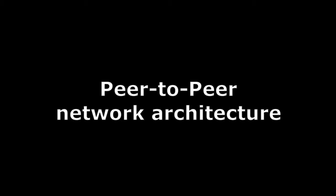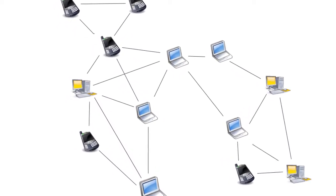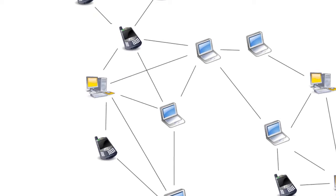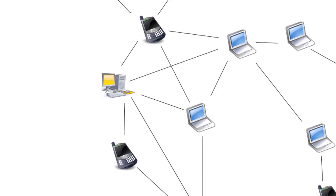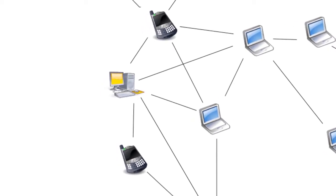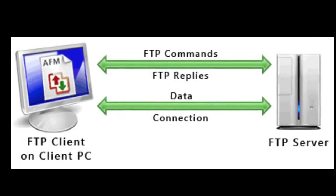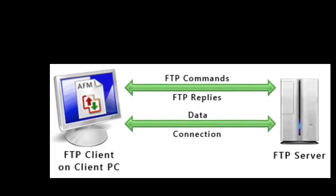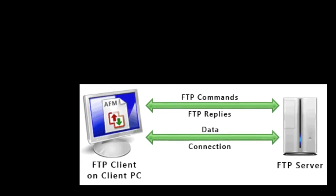A peer-to-peer network is designed around the notion of equal peer nodes simultaneously functioning as both clients and servers to the other nodes on the network. This model differs from the client-server model where communication is usually to and from a central server. A typical example of a file transfer using the client-server model is the File Transfer Protocol service, in which the client and server programs are distinct — the clients initiate the transfer and the server satisfies these requests.